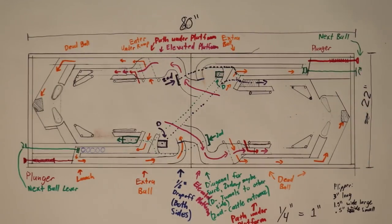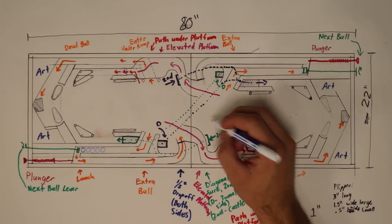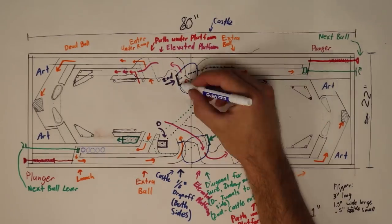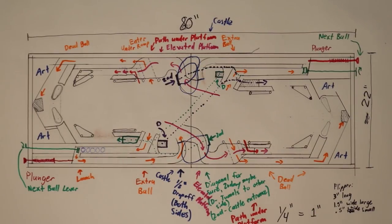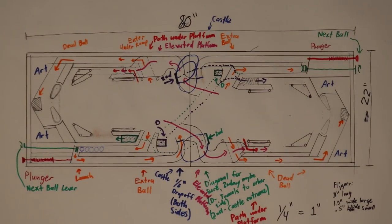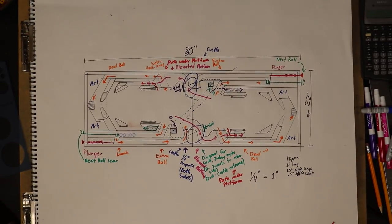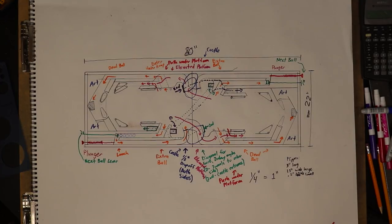Then I added in where some of the theming will be. Below the flippers will be some painted or textured art and at the crests near the elevated platforms may be castles or other structures. That part of the design will come later. The priority will be to build the pinball machine, then theme it. All the sides will be painted. I'll be using lots of blues and whites for ice and reds, oranges, and yellows for fire, along with plenty of dark colors as well.